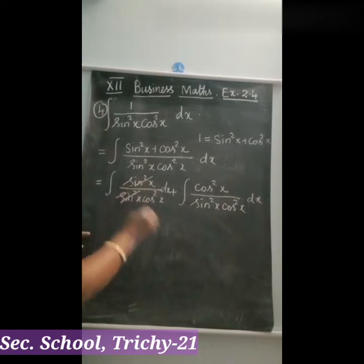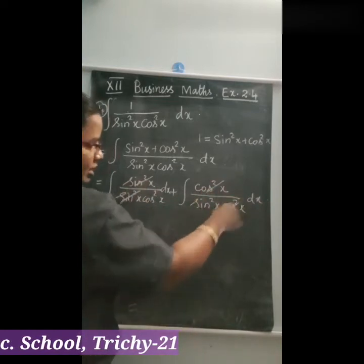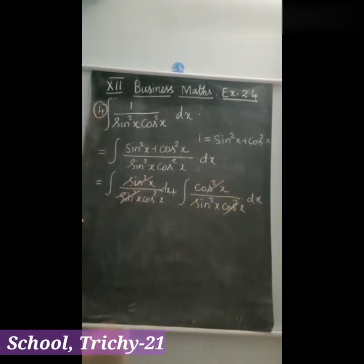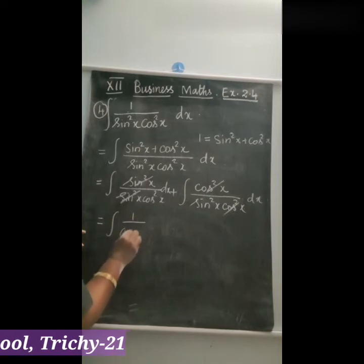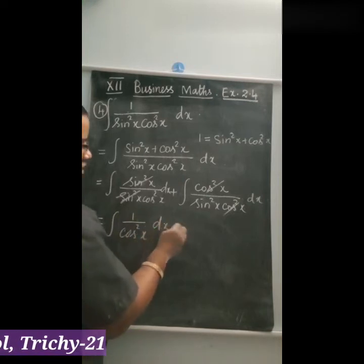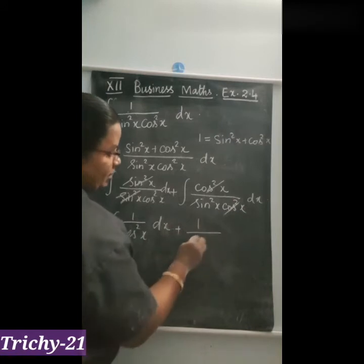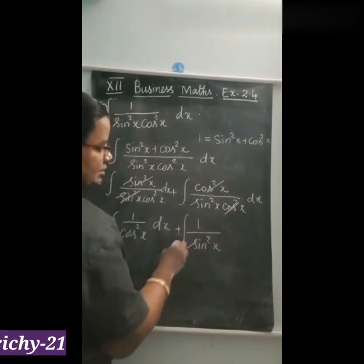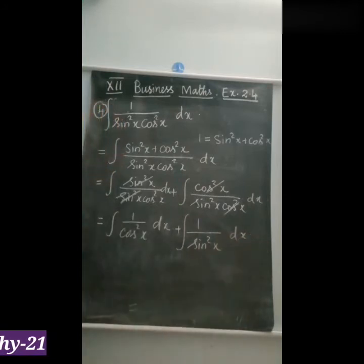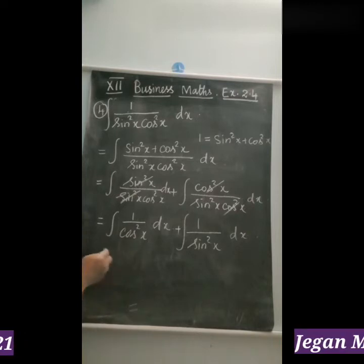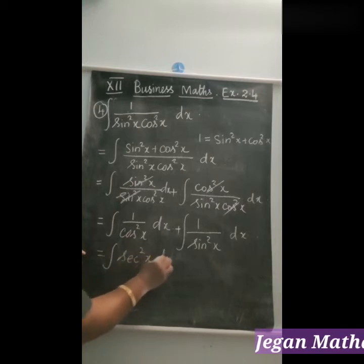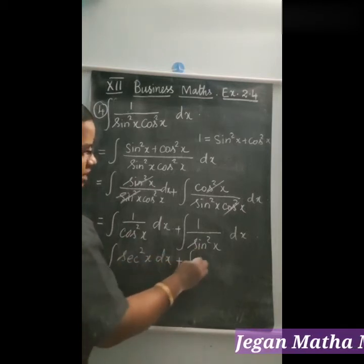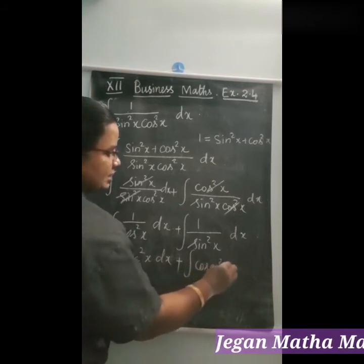Splitting the fraction: sin²x cancels with sin²x, and cos²x cancels with cos²x. This gives integral of 1/cos²x dx plus integral of 1/sin²x dx, which equals integral of sec²x dx plus integral of cosec²x dx.